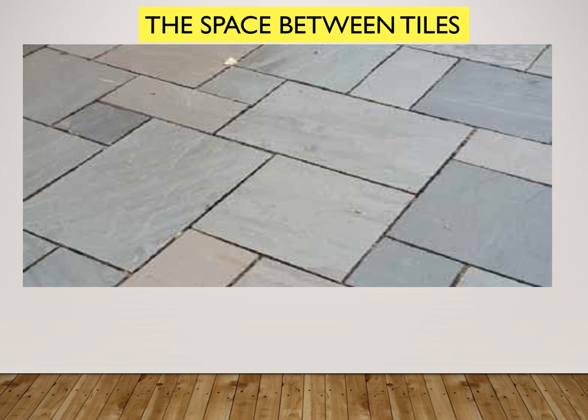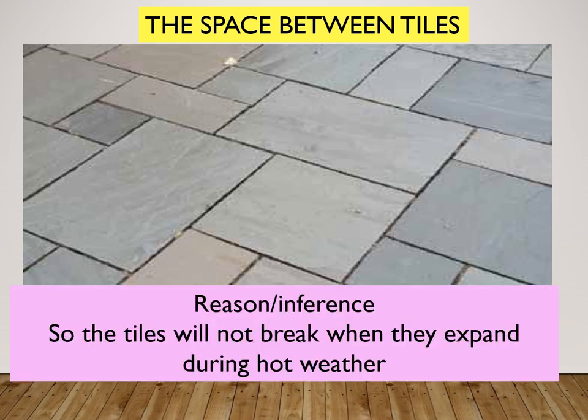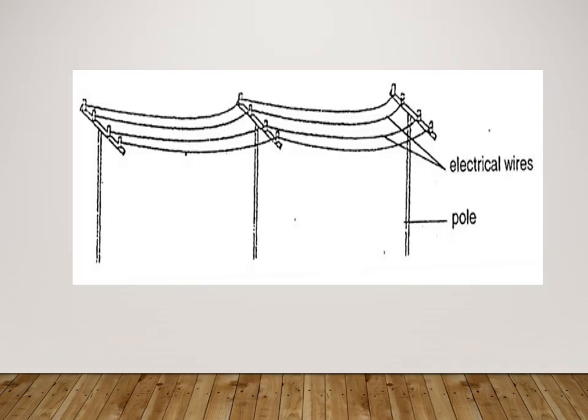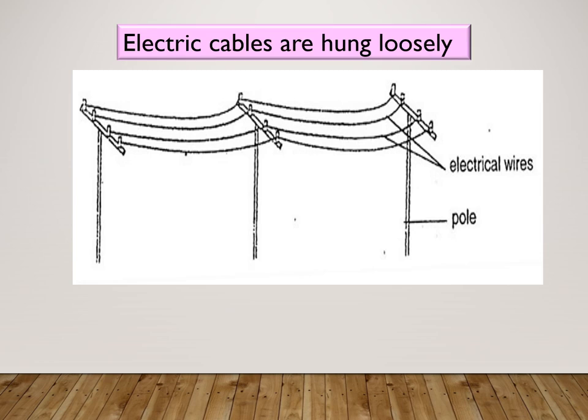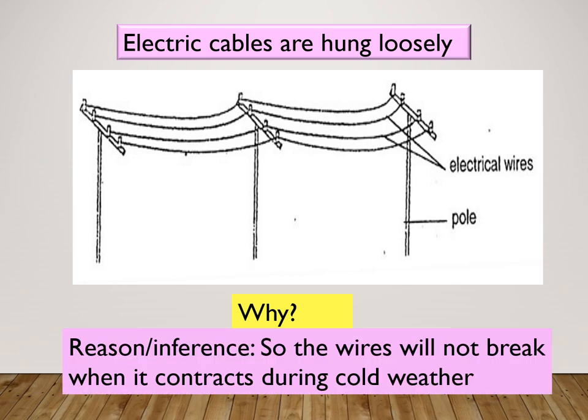There are spaces between tiles. The reason or inference for this is so the tiles will not break when they expand during hot weather. Electric cables are hung loosely — the reason or inference is so the wires will not break when they contract during cold weather.